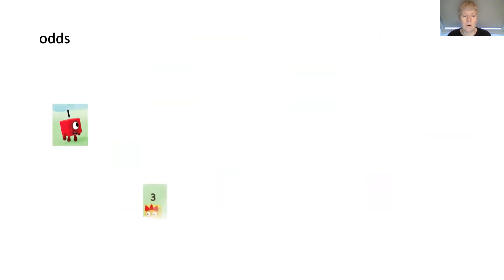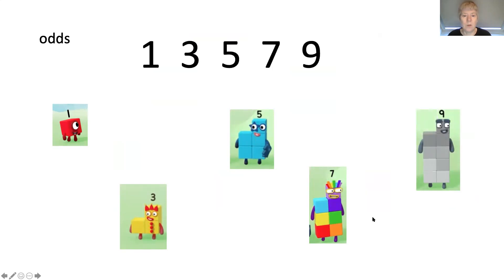We've got one, three, five, seven and nine. There are all their numbers. Right, can you remember when they were two blocks wide, the odds team all had one odd block sticking up at the top. So three's got the extra block and five and seven and nine and one is the extra block, isn't she? So all of the odds have that one extra block.